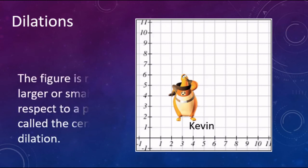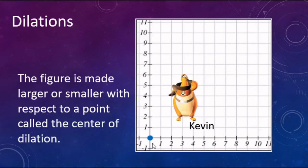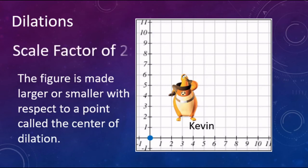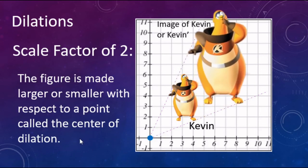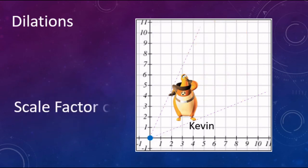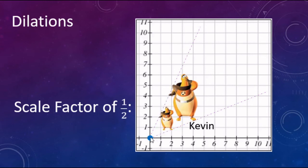Now looking at dilations — that's when the figure is made bigger or smaller with respect to a point. We're going to use the origin as our center of dilation. Starting with a scale factor of two: it's going to get twice as big and move twice as far away from the center of dilation. There's Kevin, and here's the image of Kevin after the scale factor of two dilation — Kevin prime. If we do a scale factor of a half, it's going to be half as big, shrinking down half as far from the center.